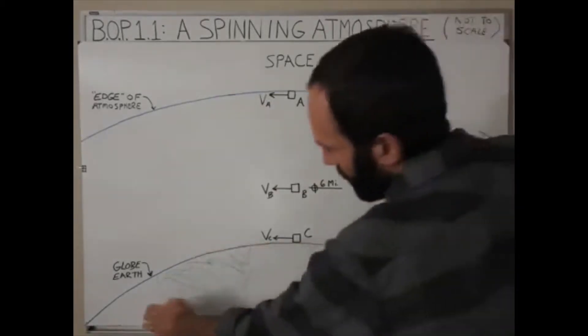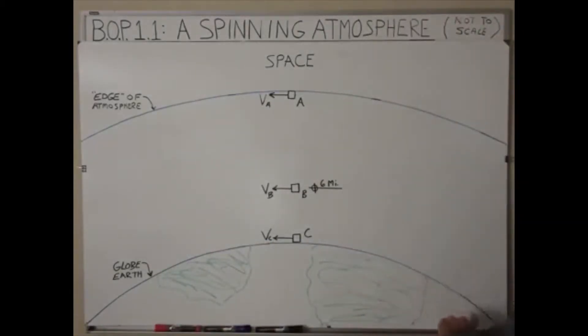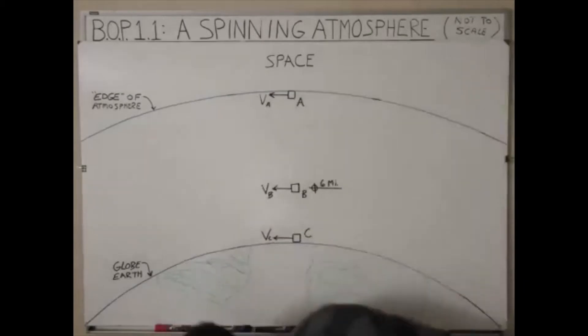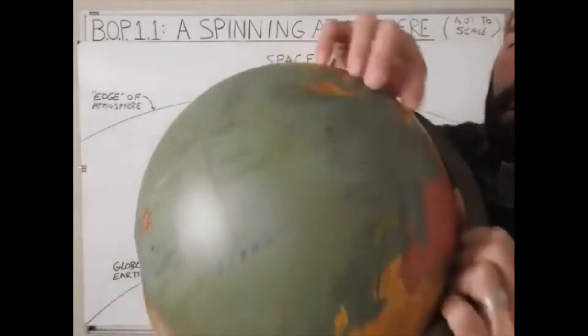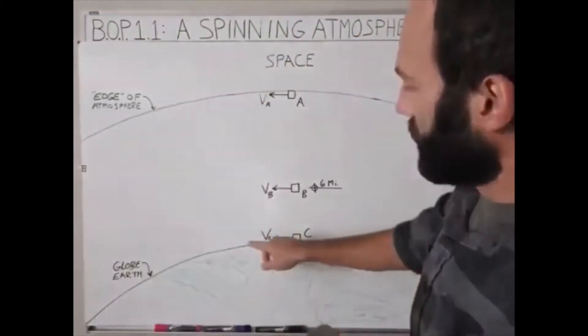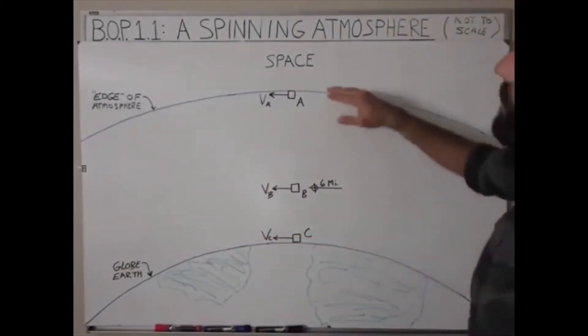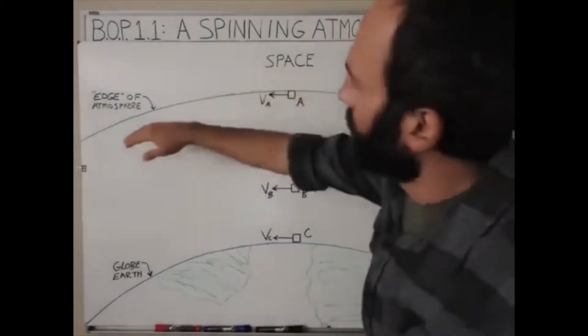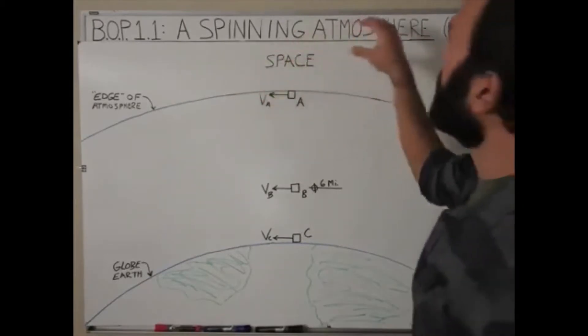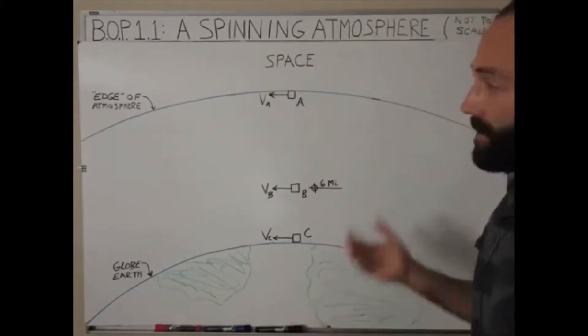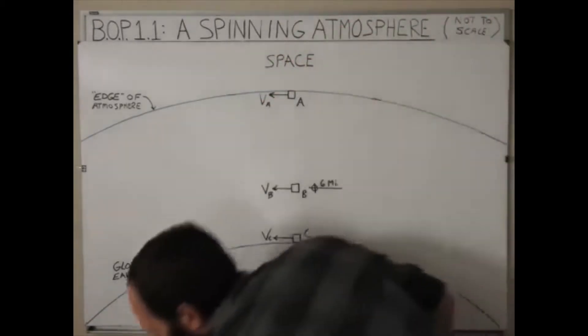So anyway, the Earth is rotating, right? And so let's say we're going to freeze the Earth at that moment, freeze the Earth with the atmosphere around it, assuming that the atmosphere is rotating with the Earth, and that's what I have drawn on the board here.